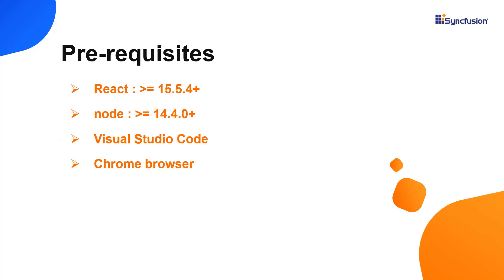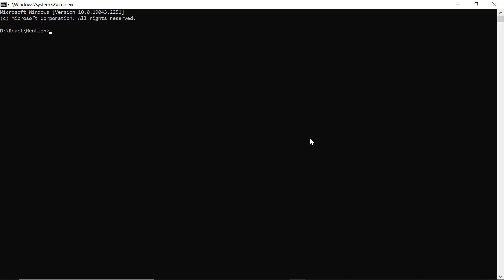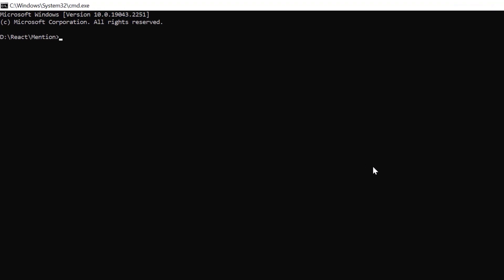Let's start with the application creation process. Make sure you have installed the latest version of React and Node in your system. I'll use VS Code as my editor and show the output in the Chrome browser. Now I'll create a new application in the command prompt using the npx create-react-app command, and provide the app name: my-react-app.